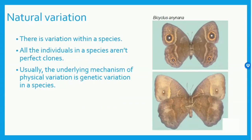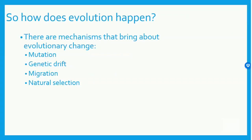It can be easy to see all the differences between species, but it's important to remember that there is natural variation present within a species. In other words, all individuals in a species aren't perfect clones. Small variations in genes can lead to some physical variation, like we see in these butterflies — they belong to the same species, but they do look different. We now understand how speciation fits into the theory of evolution, but how does evolution happen? There are four mechanisms that bring about evolutionary change: mutation, genetic drift, migration, and natural selection.